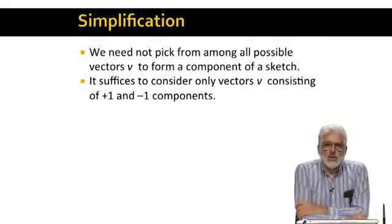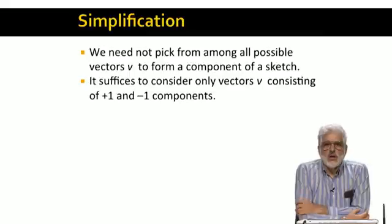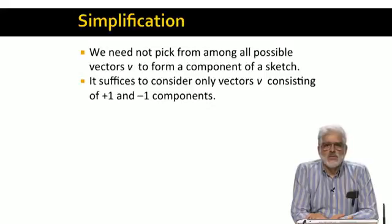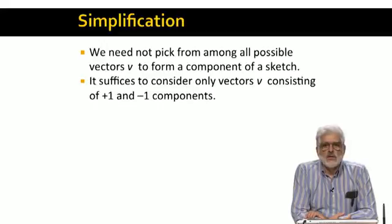While we shall not go into this reasoning, it turns out that you can avoid having to pick random vectors v from the space of all possible vectors of some dimension d. It is sufficient to let each component of each vector be either plus 1 or minus 1. That makes the calculation of dot products easier, since there is no multiplication involved, just sums and differences of the components of the vectors to which hashing by random hyperplanes is applied.